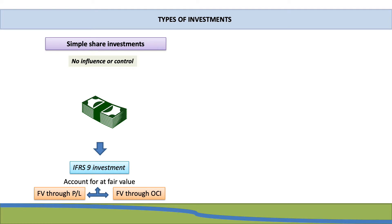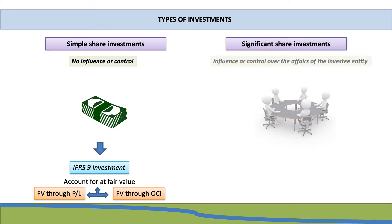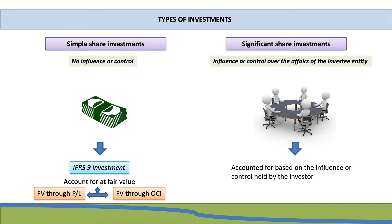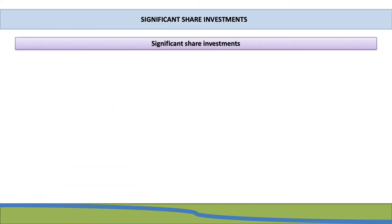The next main type of investment is referred to as a significant share investment, which occurs when an investing company has significant influence or control over the affairs of the entity. These types of investments are accounted for based on the influence or control held by the investing entity. Under significant share investments, we have three main categories.